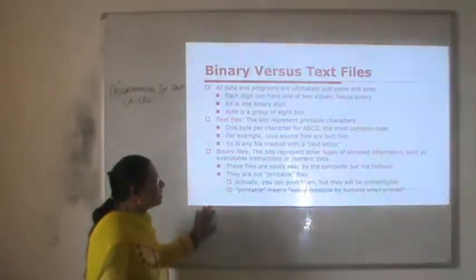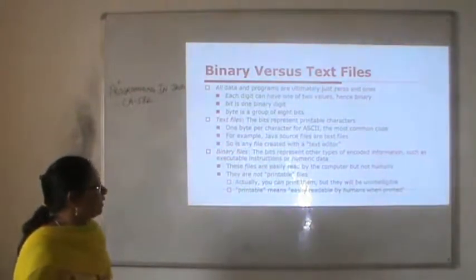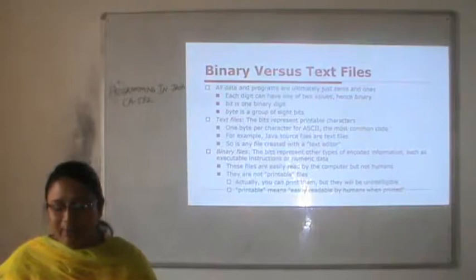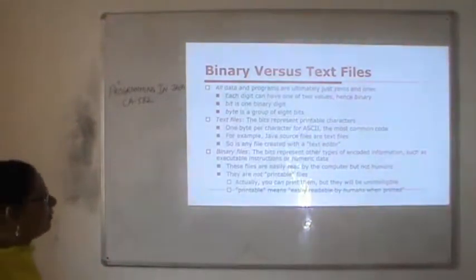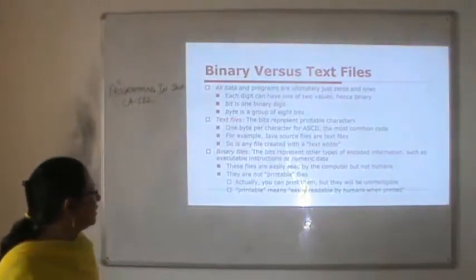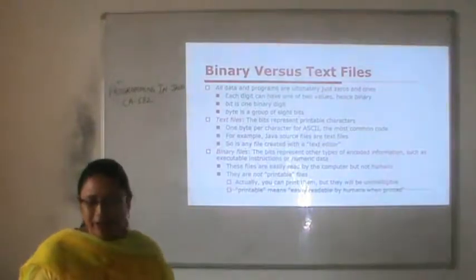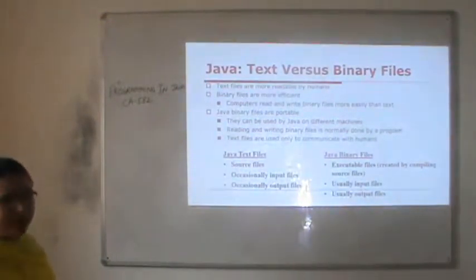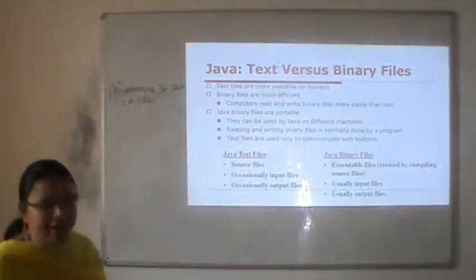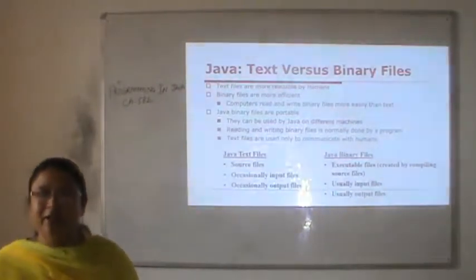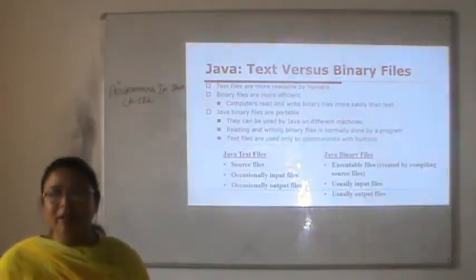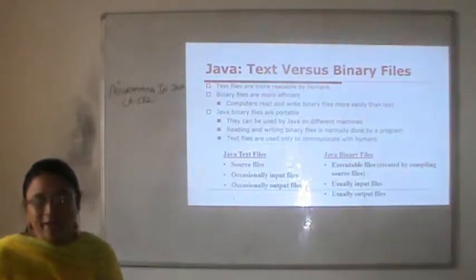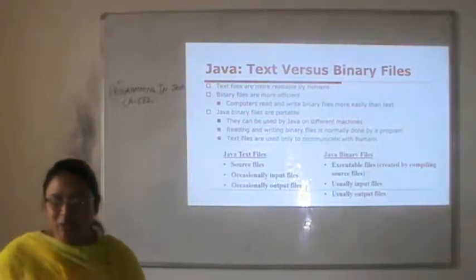What are binary files? The bits represent other types of encoded information such as executable instructions or numeric data. These files are easily read by the computer but not by humans — they are not printable in a human-readable way. Text files are more readable by humans, while binary files are more efficient as computers read and write binary files more easily. Java binary files are portable and can be used by Java on different machines. Reading and writing binary files is normally done by a program, while text files are used only to communicate with humans.